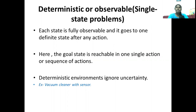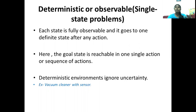We also call this a single-state problem. Using the vacuum cleaner example from before — the vacuum cleaner knows exactly what to do when an input is given. When instructed to move left, it moves left. When instructed to clean dirt, it cleans the dirt. With its sensor, it knows exactly what the next step will be. When the environment is fully observable and we exactly define what to do in the next state, this type of problem is called a deterministic or single-state problem. This is the simplest type and solutions are easy to form.